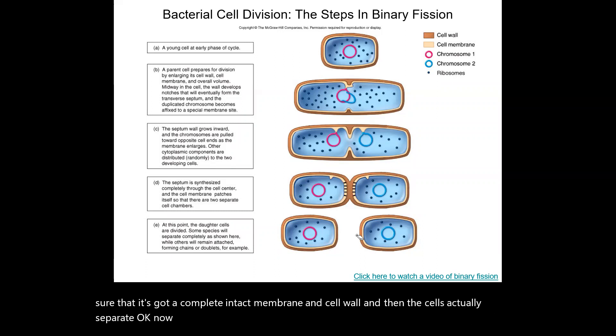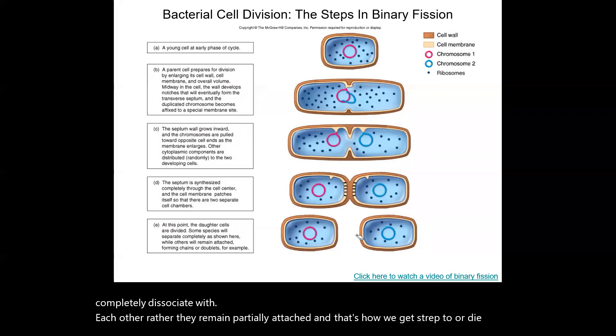Now, some separate completely like this, but as we've talked about in lab, some cells don't completely dissociate with each other. Rather, they remain partially attached, and that's how we get strepto or diplo or staphylo cell arrangements.